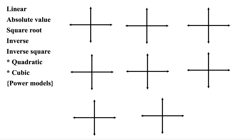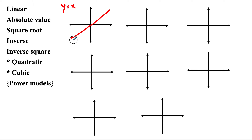We're talking about the most unmodified form of each of these, which for linear would be y equals x — that is slope of one, y-intercept zero, which would look like this. So this is the most basic form. In every case, we're talking about the least modified basic form of these.